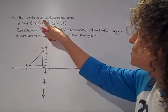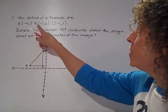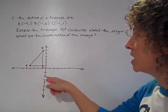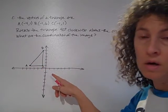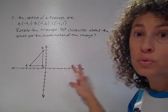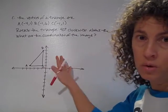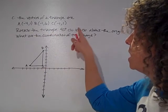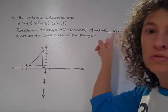We have the vertices of a triangle are A(-4,1), B(-1,6), and C(-1,1). So the first thing I did was I graphed those points on my coordinate plane. I made sure I labeled the vertices of my pre-image. Remember this is the image we're starting with, so it's my pre-image. Rotate the triangle 90 degrees clockwise about the origin.